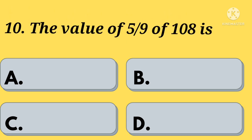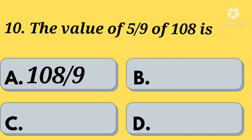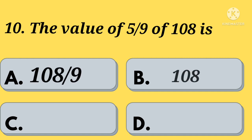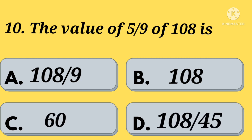The value of 5 by 9 of 108 is — Option A: 108 by 9. Option B: 108. Option C: 60. Option D: 108 by 45. Your time starts now.